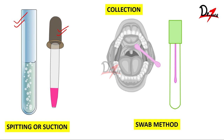The second technique is the swab technique. A pre-weighed swab, cotton roll, or gauze is placed inside the mouth at the orifice of the major salivary glands. After a collection period, it is removed and re-weighed to determine how much saliva has been secreted.